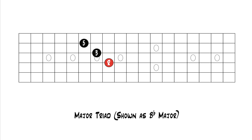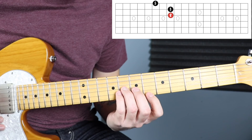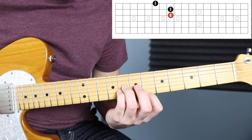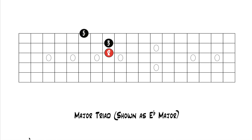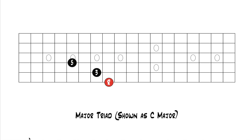Moving the triad shape down again to the third string root, the major triad looks different again because a note is now on the second string and had to move up half a step, changing the shape. All of these shapes I've shown you are the same thing — close position major triads in root position. The shape just changes depending on the string sets, but if you keep them on the same string set, the shape stays the same.